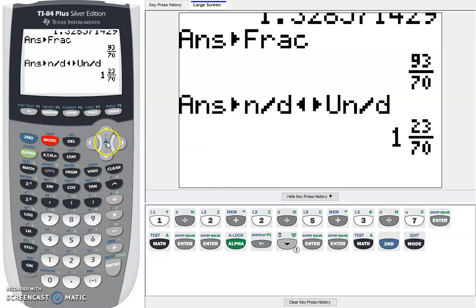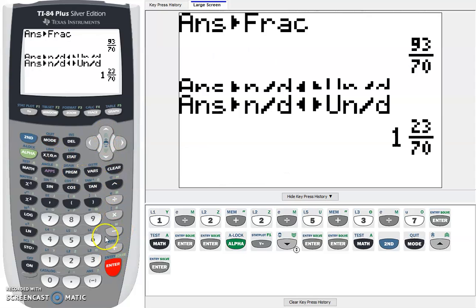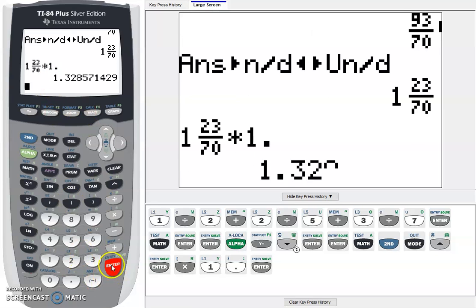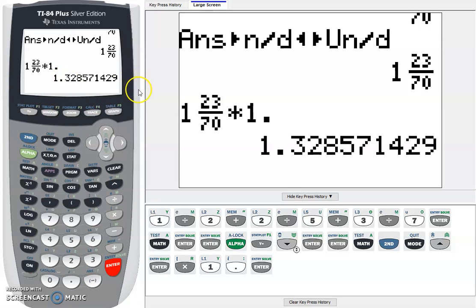Or we could also do a way of, if I go back up to this number, we're going to enter it or paste it back into it. And then we're going to do times 1.0. It's just saying I want a decimal now. If we press that, it's going to change it back to the decimal. That's one way we could do that with fractions.